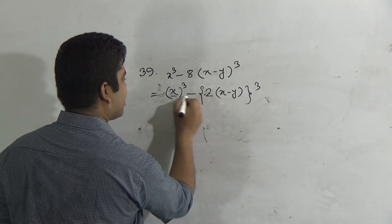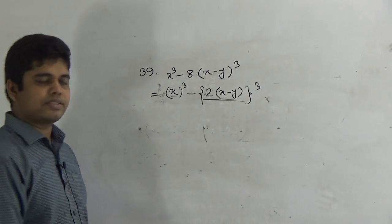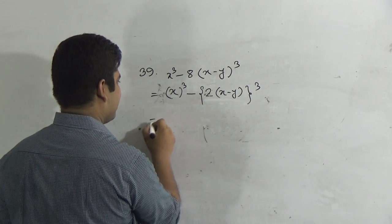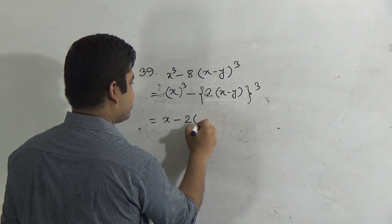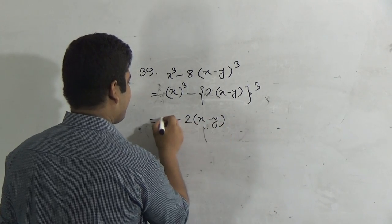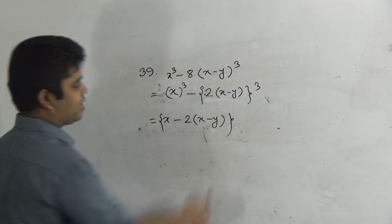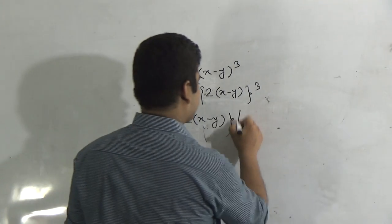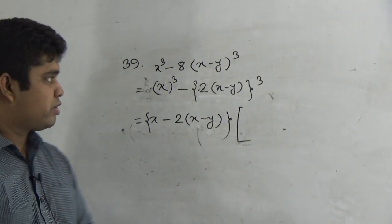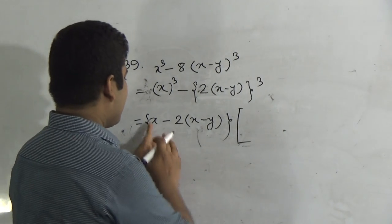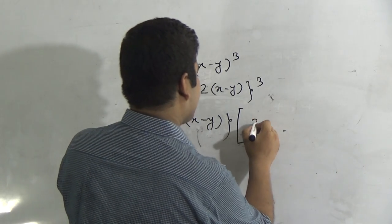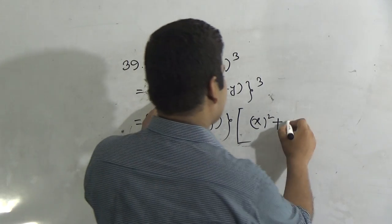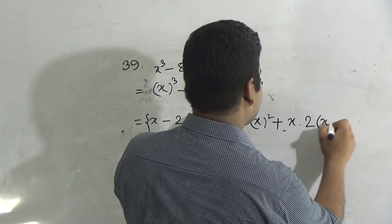We apply the a³ minus b³ formula, which gives [x minus 2(x minus y)]. Here we use a second bracket because a first bracket is already present, so we do not write a first bracket again. Next we write the third bracket. So: a minus b, then a² — here a means x² — then plus ab, where a means x and b means 2(x minus y).